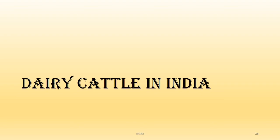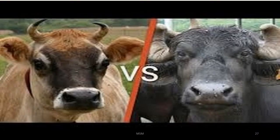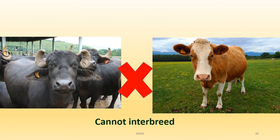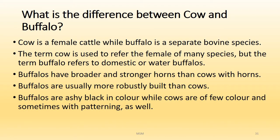Regarding dairy cattle in India, there is always an argument between the cow and the buffalo. The buffalo also belongs to the family Bovidae, and what we have in India is the domesticated water buffalo. The genus and species are different — the genus is Bubalus instead of Bos. That is the major difference. You cannot interbreed cow and buffalo; they are two separate species. Cow is a general term given to any female cattle, but buffalo is a separate species altogether.